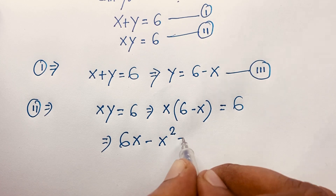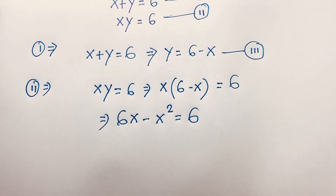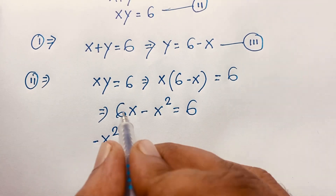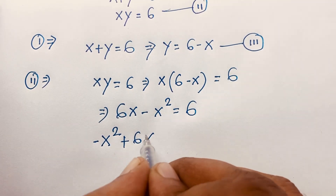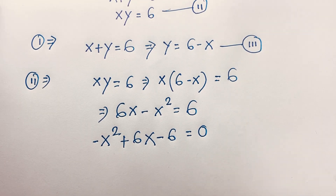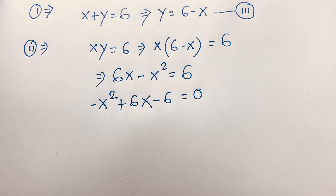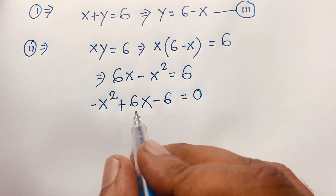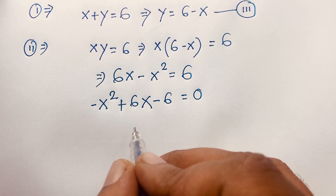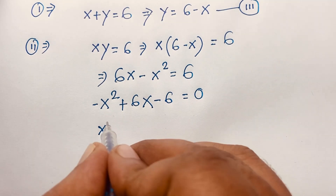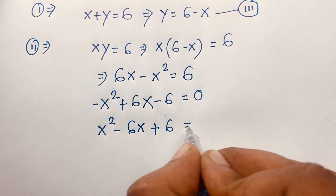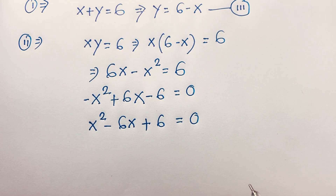So this expression becomes: negative x squared plus 6x, and if I move the 6 to the left side it becomes negative 6, equal to 0. This gives us a nice quadratic equation. If I multiply both sides by negative 1, this becomes x squared minus 6x plus 6 is equal to 0.